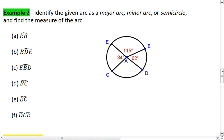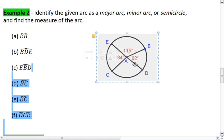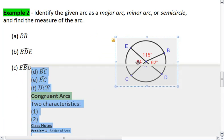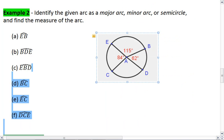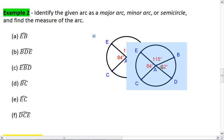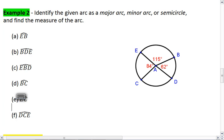This brings us to example two. In example two, you're given the diagram on the right. I want you to identify the given arc as a major arc, a minor arc, or a semicircle, then find the measure of the arc. Try this on your own first and resume the video when you're ready to check your solutions.